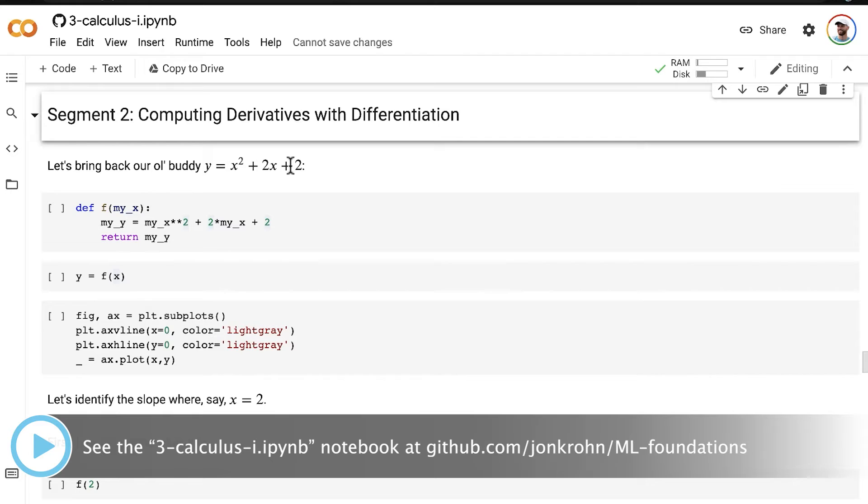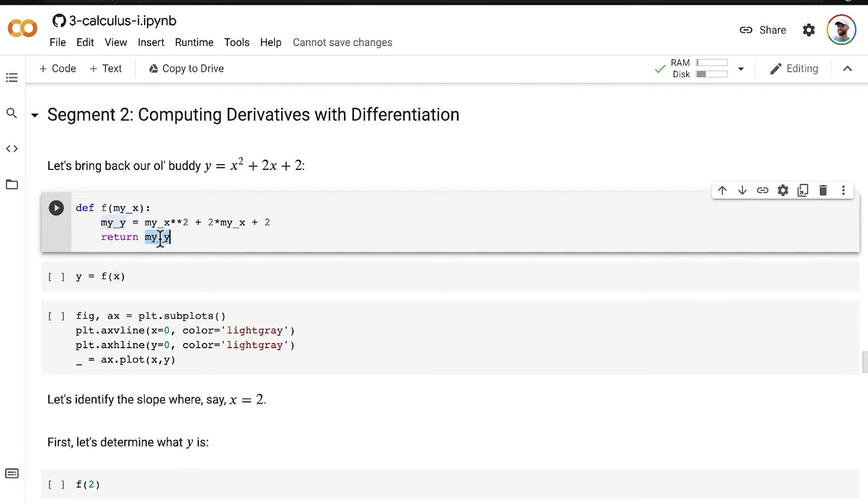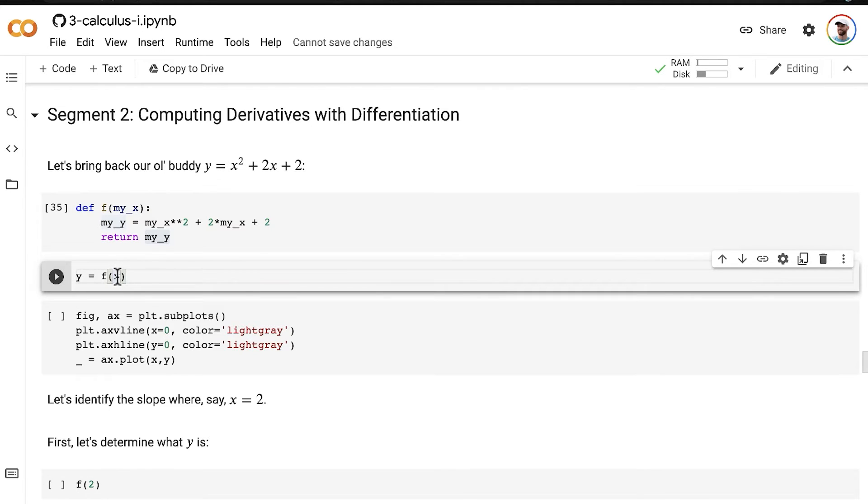We've worked with this a number of times already in this notebook. But now for the first time, we're going to put it into a function. I'm going to very creatively call that function f. So we pass in some x value, and then we calculate x squared plus 2x plus 2. That gives us our y value, which we return out of the function. We have our x value still in x. It's our thousand x values ranging from negative 10 up to positive 10 that allows us to create nice-looking plots.